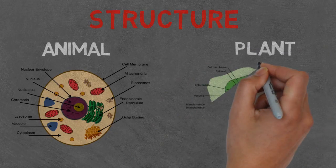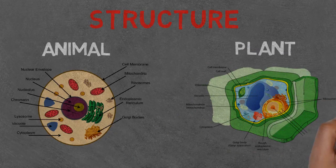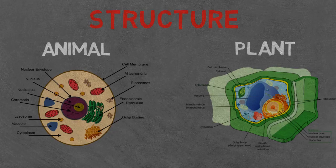Golgi bodies, which sorts, tags, and packages proteins and lipids. Endoplasmic reticulum can be both smooth or rough and transport vesicles to the Golgi body.